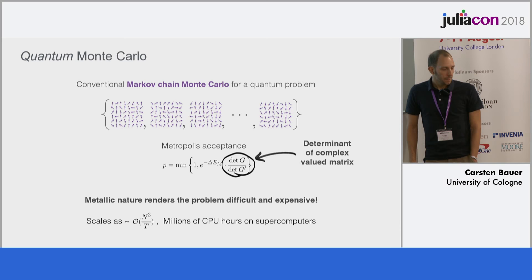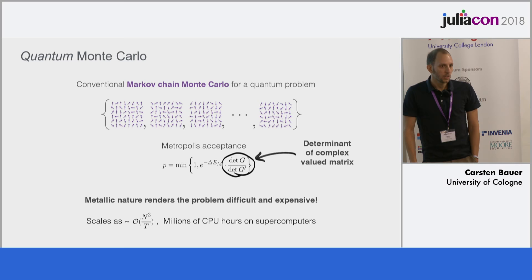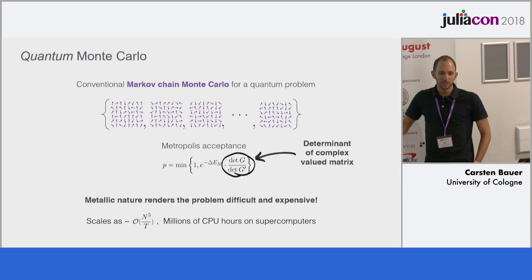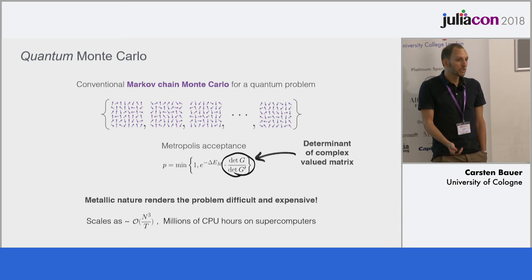To give you a feeling for what I mean by expensive: my codes run for millions of CPU hours on modern supercomputers, and it's just me that does it — there's no huge team, it's one person burning all this computational effort. So certainly you want a nice and also performant language for performing these simulations, and in my eyes Julia is the best language for writing these simulations.